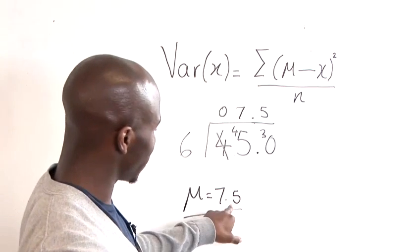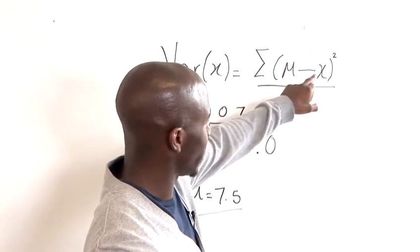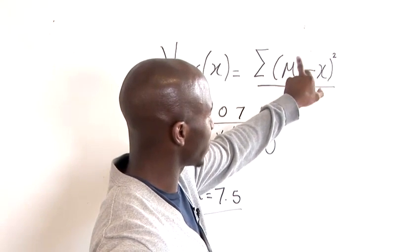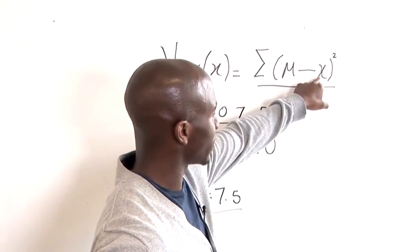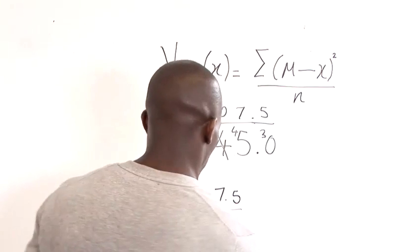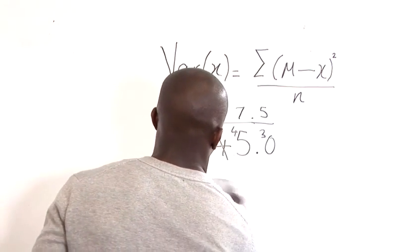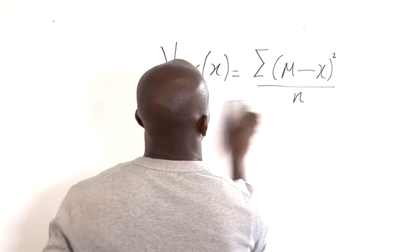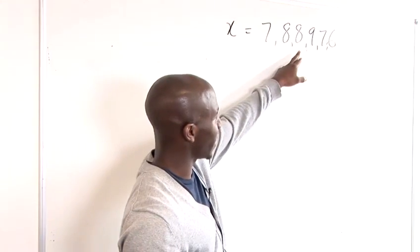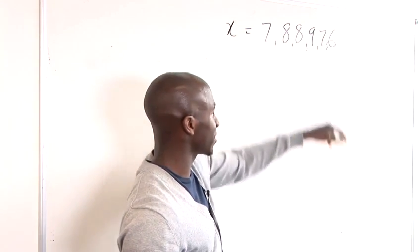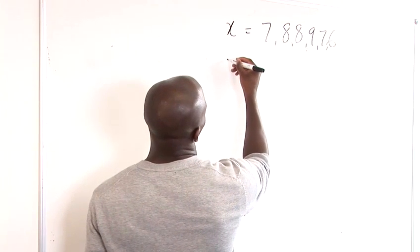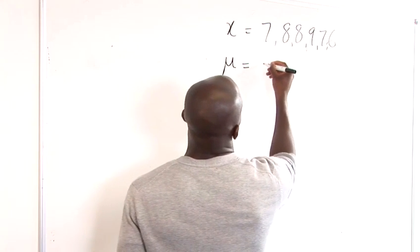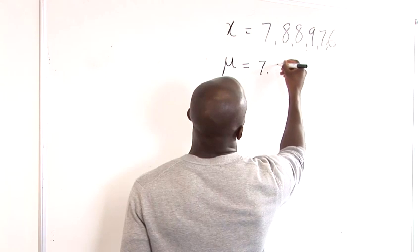Now what we want to do is stick this value inside here, and actually calculate this difference here that we've got with the squared value: 7, 8, 8, 9, 7, 6, and our μ value, which is our expected value, is basically 7.5.